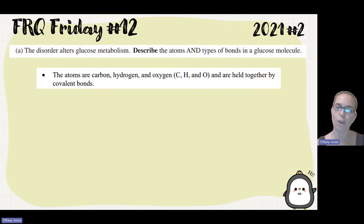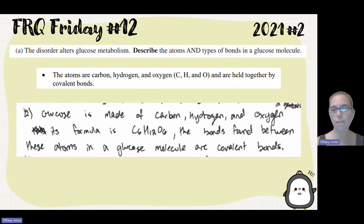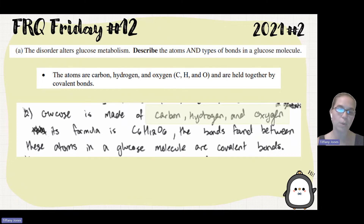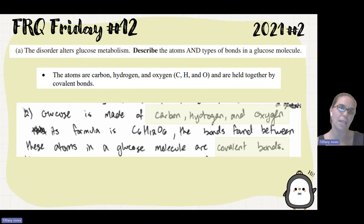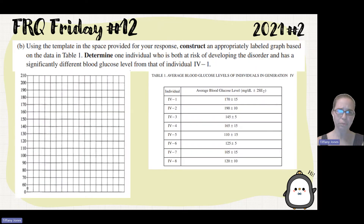Let's see what the student wrote. Glucose is made of carbon, hydrogen, and oxygen — its formula is C6H12O6. The bonds between these atoms in a glucose molecule are covalent bonds. They were quick and to the point, and explained everything needed to describe what makes up that glucose molecule.